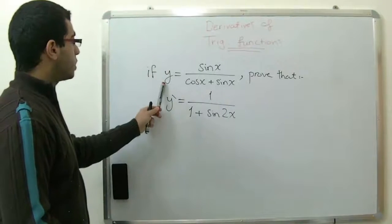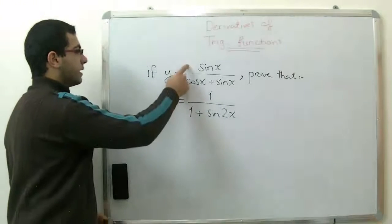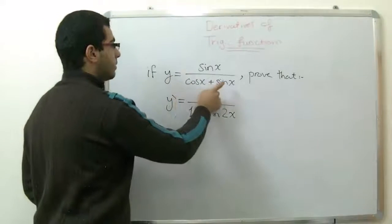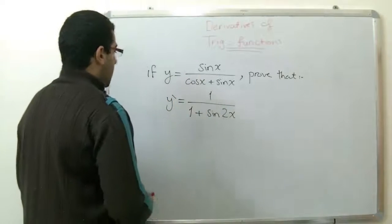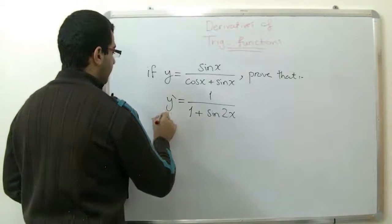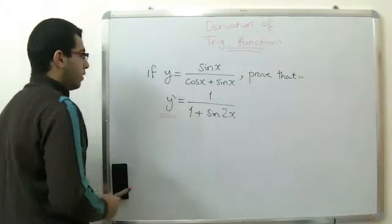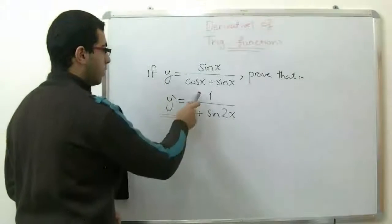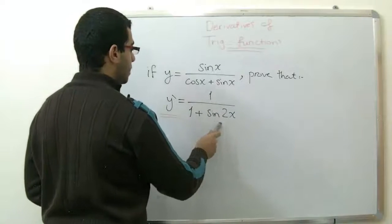We have a function y which equals sine x over cosine x plus sine x. And we want to prove that y prime, or the derivative of this function, equals 1 over 1 plus sine 2x.